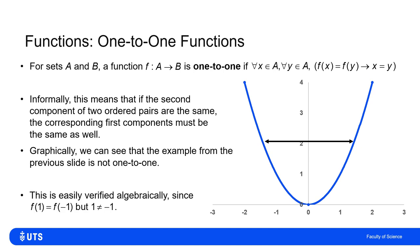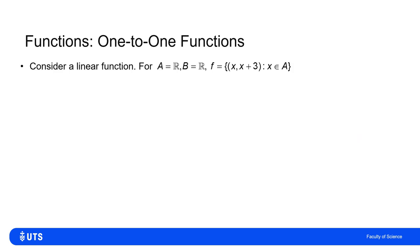We can see this both algebraically or graphically. I've got a linear function here that says if I give an input which is a real number, I'll get an output which is a real number. This function is the ordered pairs (x, x+3) such that x is a real number.